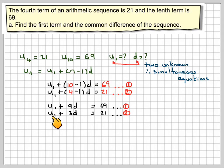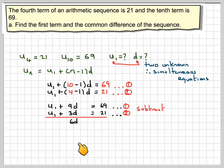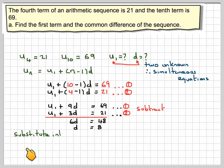We're going to eliminate U1, therefore we will subtract. Subtracting we get 9D minus 3D which is 6D, and 69 minus 21 which is 48. Therefore D equals 48 divided by 6, which is 8. So the common difference is 8.